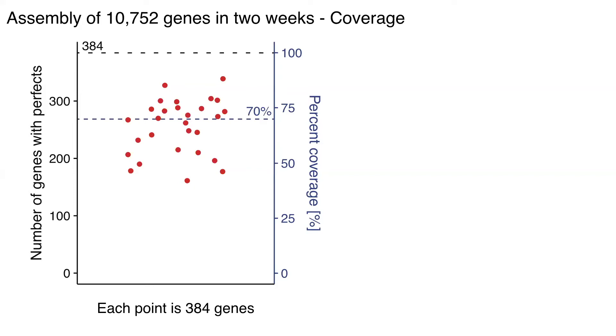So for each of these proteins, how often did we see the perfect sequence assembled for each of these genes? And you can see the typical coverage for each of these libraries is roughly around 70%. We're working on ways of getting that up.